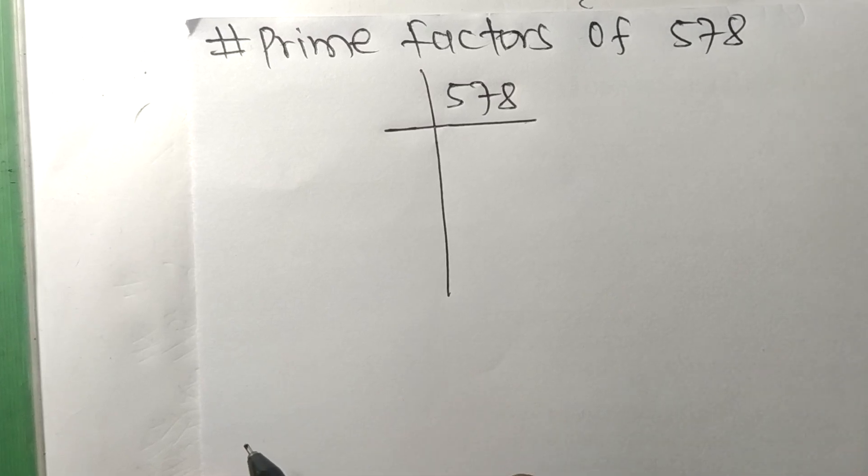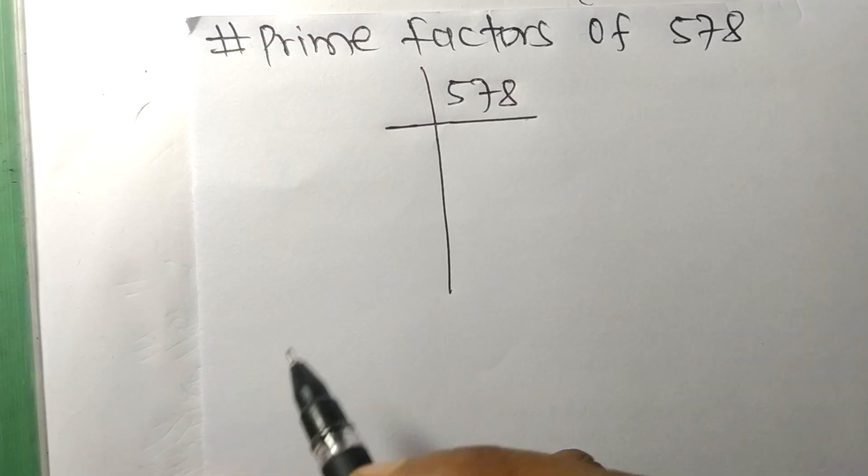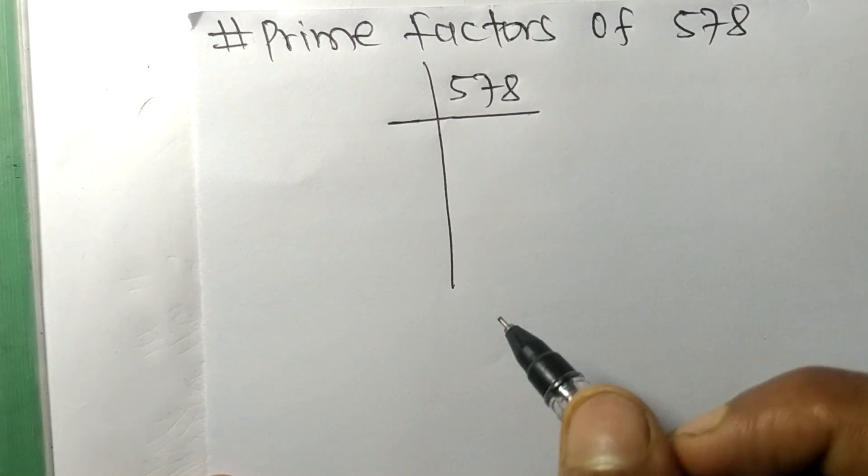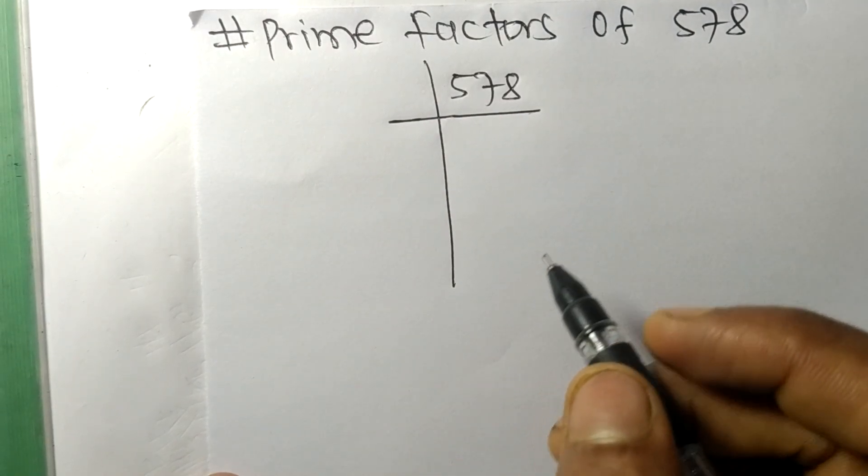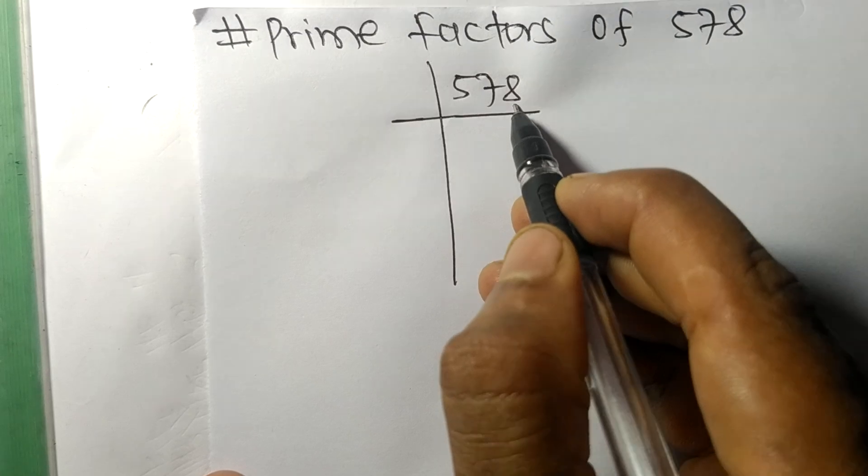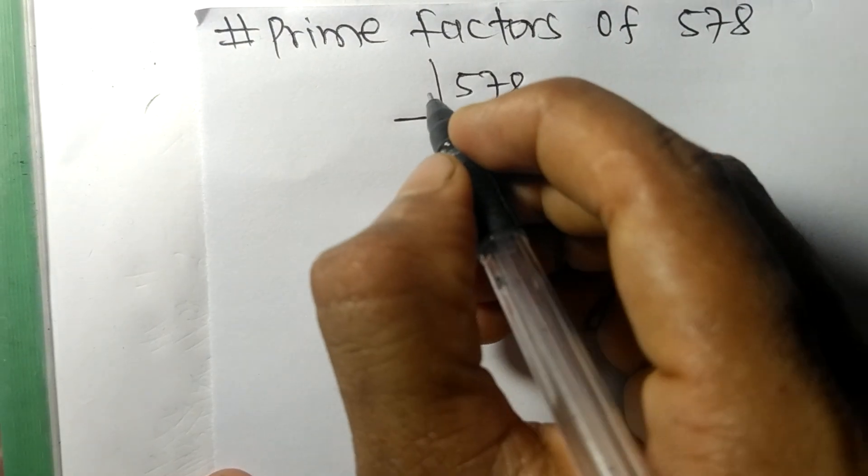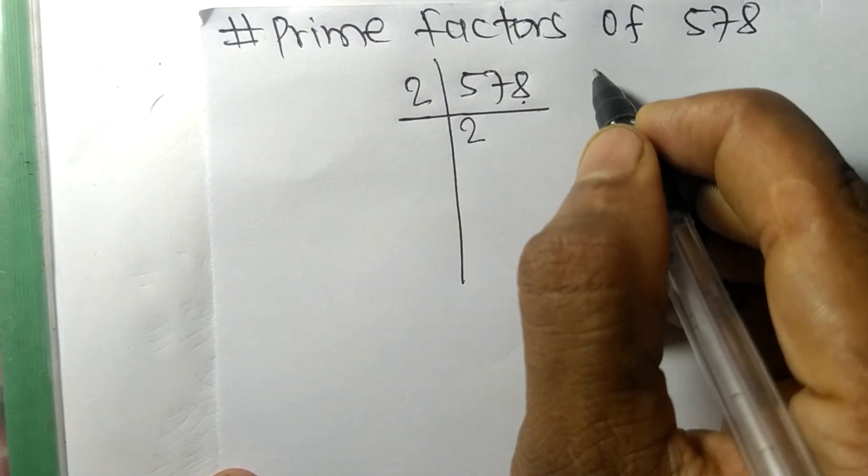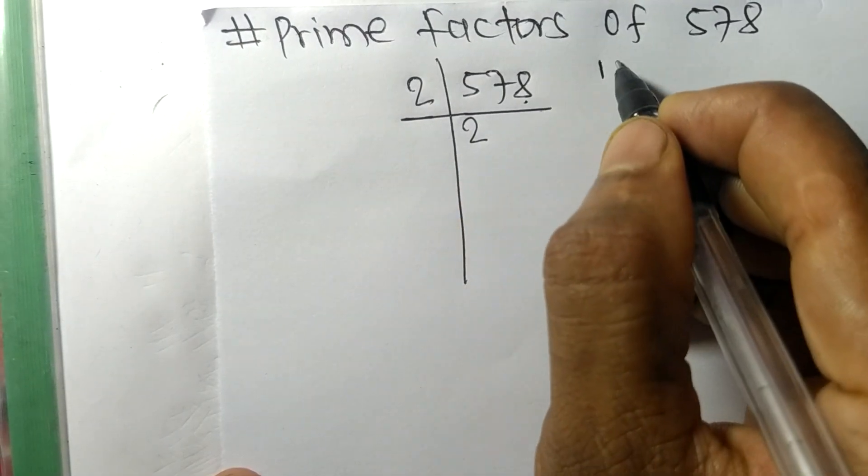So today in this video we shall learn to find the prime factors of 578. It contains an even number 8, so this whole number is divisible by 2. 2 times 2 means 4, remainder 1 and 7. 17, 2 times 8 means 16, remainder 1 and 7.